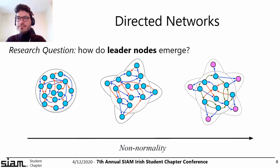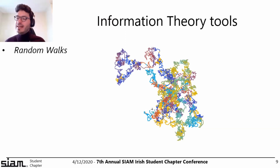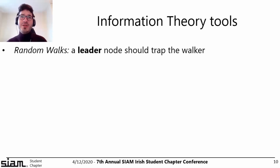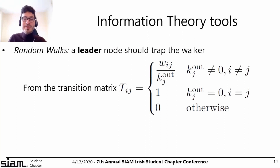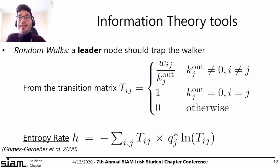To investigate that, we also used another tool: the idea of a random walk through the network structure. The intuition is that a random walker should be trapped into a leader node. We can consider a transition matrix that gives the probability of walking from one node to the next.